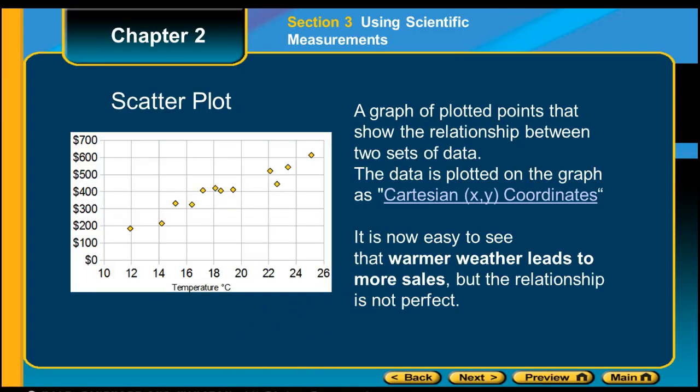A scatter plot is a graph with plotted points showing a relationship between those two sets of data. Remember, your x and your y, using your Cartesian coordinates, you go over a number and up a number, depending on what the values are. So in this example, we can see that the temperature on the bottom scale and the dollars on the side, it looks like warmer weather leads to more sales. But the relationship isn't perfect. You can see that as the temperature increased, the money increased. So you can make a relationship.